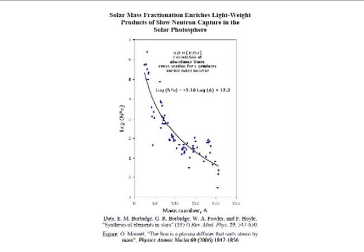72 different types of atoms in the Sun's photosphere were made by slow neutron capture, the S-process of nucleosynthesis. These S-products also show the effects of mass fractionation, as seen earlier in isotopes of elements in the solar wind.